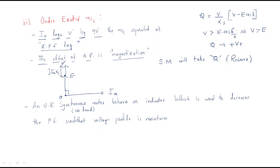In the phasor diagram for the under-excited case, E and V are shown with Ia lagging. The under-excited synchronous motor is used to decrease the power factor such that the voltage profile is maintained constant. Its application is acting as an inductor.